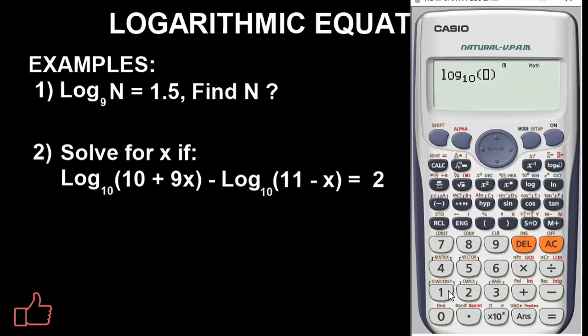In the brackets, we have 10 plus 9x, alpha x. Then minus. Make use of this log again. The base is still 10. What we have there is 11 minus x, alpha x. As usual, you don't go directly to this equals. You press alpha and calc. The value equals 2.